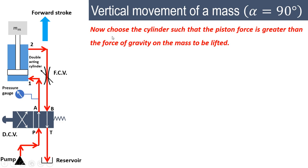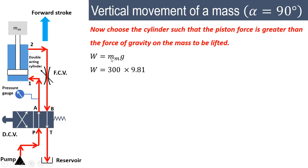We must choose a cylinder such that the piston force is greater than the gravitational force on the mass to be lifted. The weight W = mm·g always acts vertically downward, so the force created must be greater than the weight of the mass. If we assume the mass mm = 300 kg, then W = 300 × 9.81 = 2943 N.